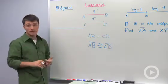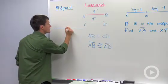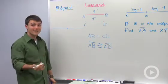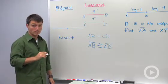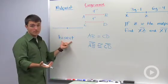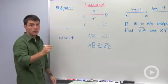So getting back to our line segment, there is one point on this line segment that will bisect it. I'm going to write that down. Bisect is also a geometry vocabulary word. Now, what bisect means is that it will divide this into two congruent pieces.